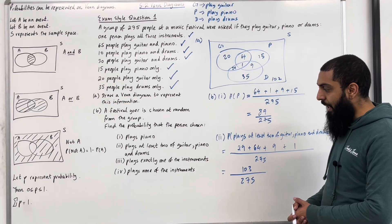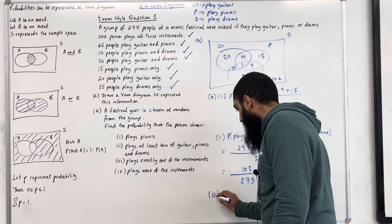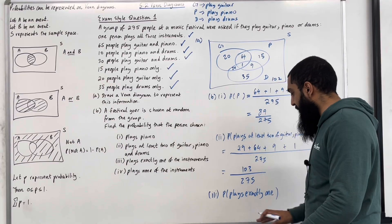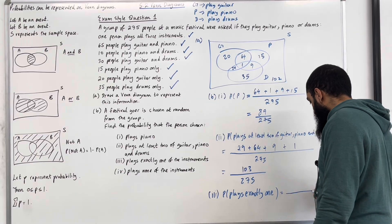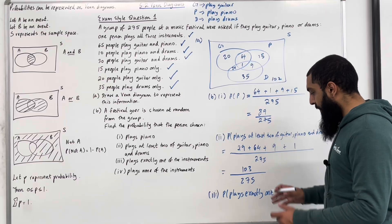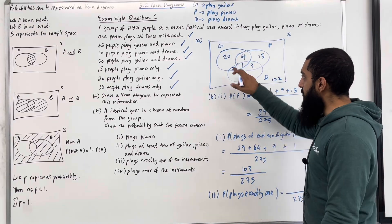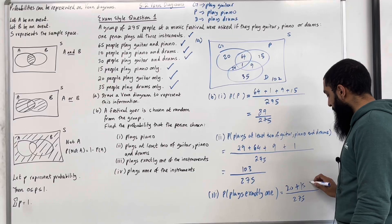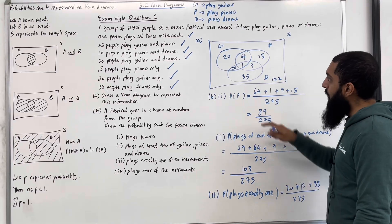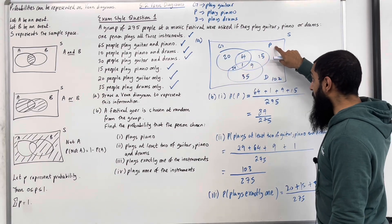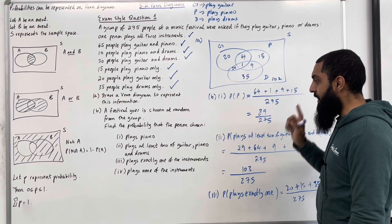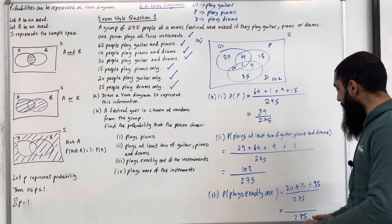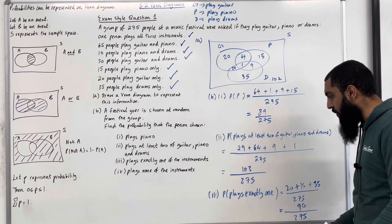Part 3: plays exactly one of the instruments. The probability is out of 275. Plays exactly one is satisfied by: 20 (playing guitar only) plus 15 (playing piano only) plus 35 (playing drums only). All three numbers satisfy the condition of playing exactly one instrument. Adding the numbers in the numerator gives 70, so the probability is 70 out of 275.